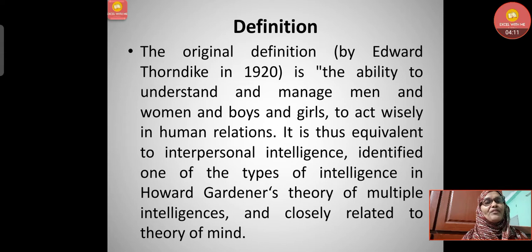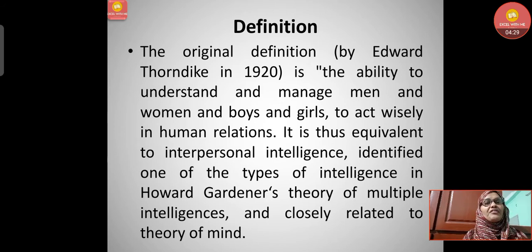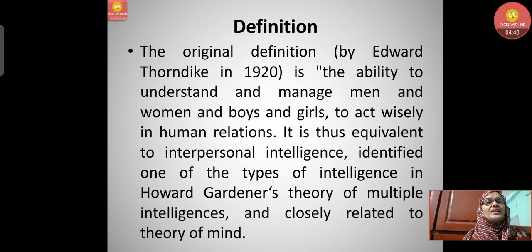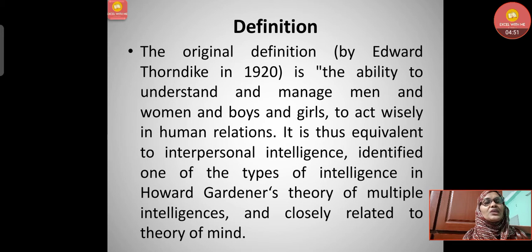The original definition by Edward Thorndike in 1920 is: 'the ability to understand and manage men and women, boys and girls, and to act wisely in human relations.' This is how we understand and mingle with other people in society. Social intelligence is thus equivalent to interpersonal intelligence, one of the types identified in Howard Gardner's theory of multiple intelligences, and is closely related to the theory of mind.